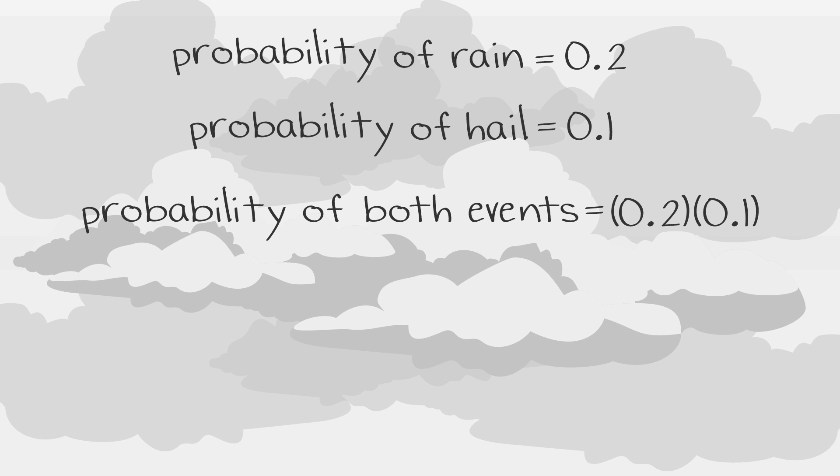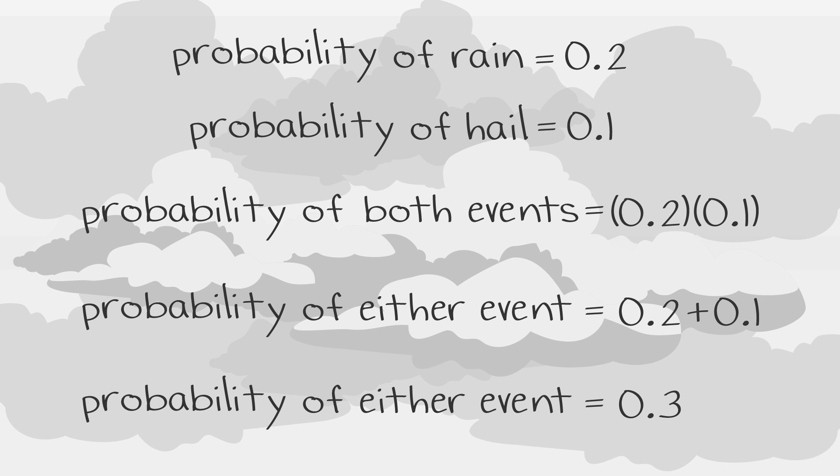If we want to find the probability of either rain or hail from our rain example, we already know our individual probabilities. So we would set the probability of either event equally happening to 0.2 plus 0.1. Doing the math, we get that the probability of either event occurring is equal to 0.3.